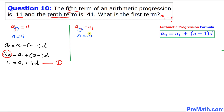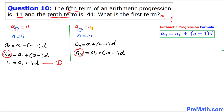Using the same formula again with a sub 10: a sub n equals a sub 1 plus (n minus 1) times d, with n equal to 10, giving a sub 10 equals a sub 1 plus (10 minus 1) times d. Since a sub 10 equals 41, this becomes 41 equals a sub 1 plus 9d. We call this Equation 2.